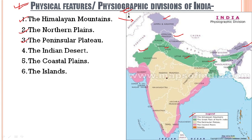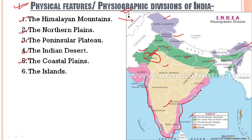Then we have the peninsular plateau, represented in light brown color. Then we have the Indian desert — in Rajasthan you will find the Indian desert, the Thar desert. Then we have the coastal plains. Looking at the western side and the eastern side of India, the land touching the water bodies on the west and east are known as coasts, and the plains situated along the coast are known as coastal plains — the western coastal plains and the eastern coastal plains.